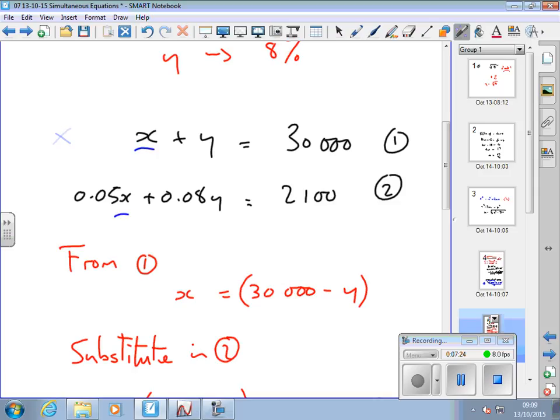And that method is to multiply equation 1 or 2 by something so that X is the same in both equations. So if I were to multiply that first equation by 0.05, I'd have 0.05X plus 0.05Y equals 0.05 lots of 30,000. And I'd have 0.05X in both equations and then I could subtract one from the other to get rid of the Xs. I'm not going to go through that in detail. I'm going to leave that for you as a home exercise. Look up the elimination method, the third one, and see how that works.